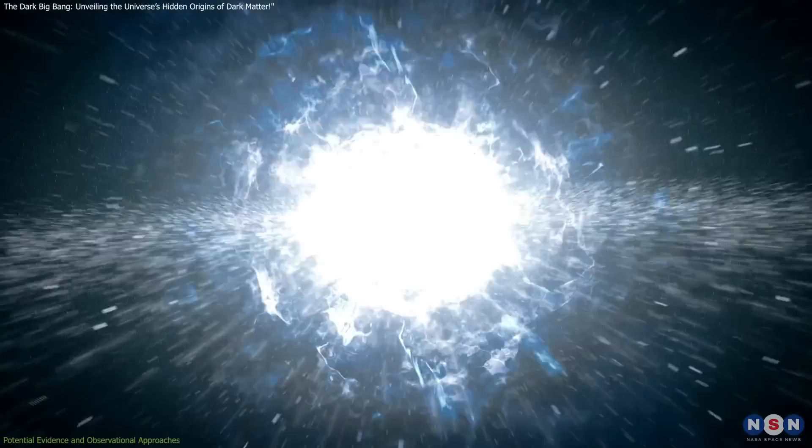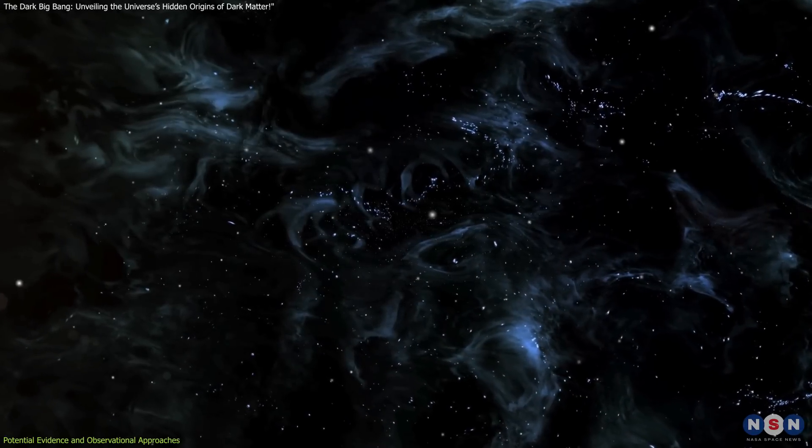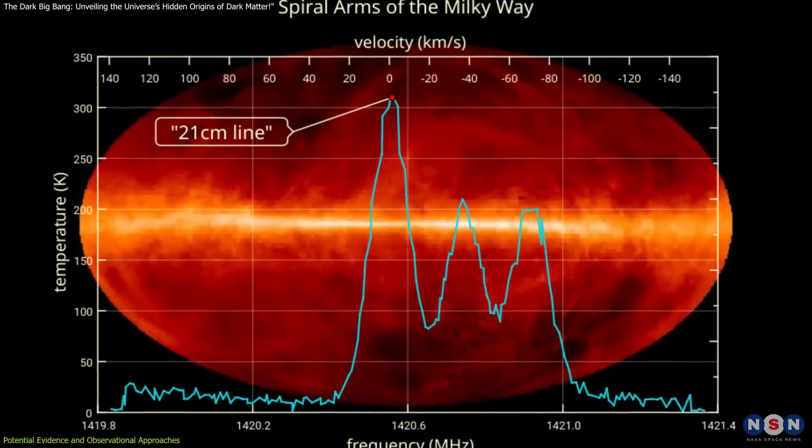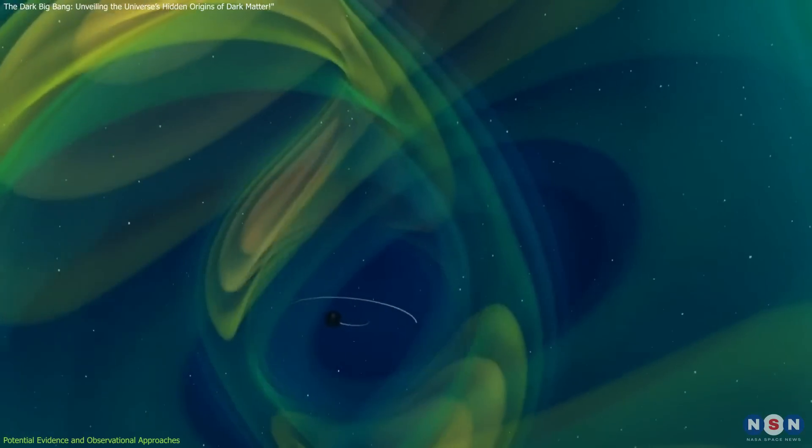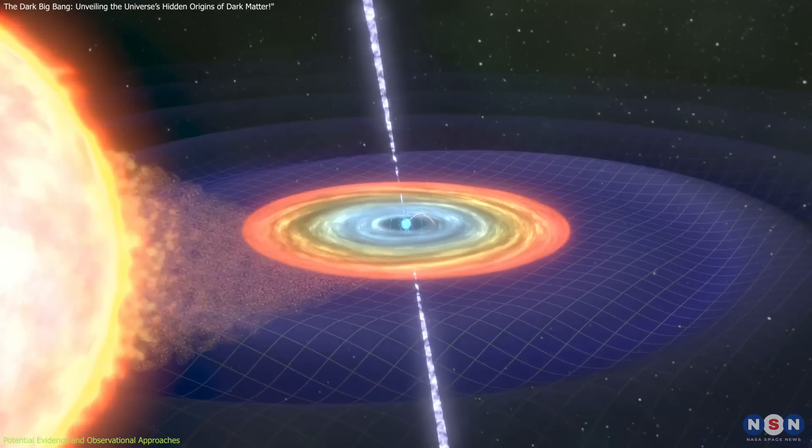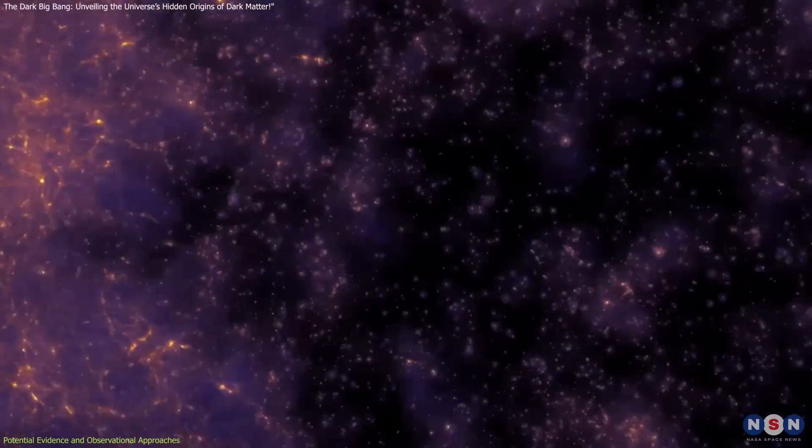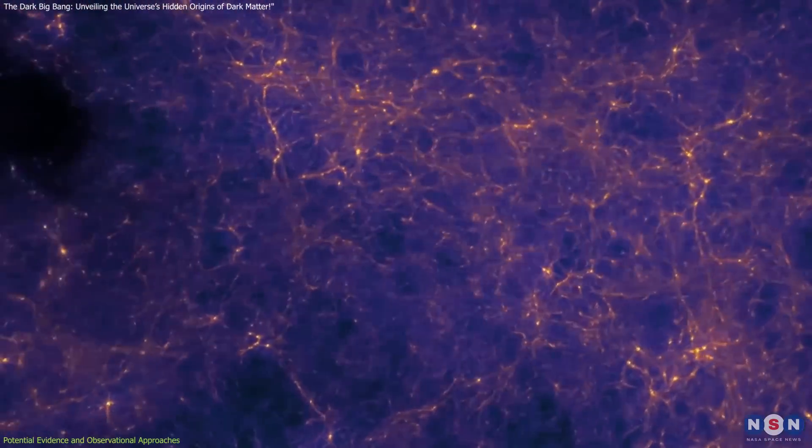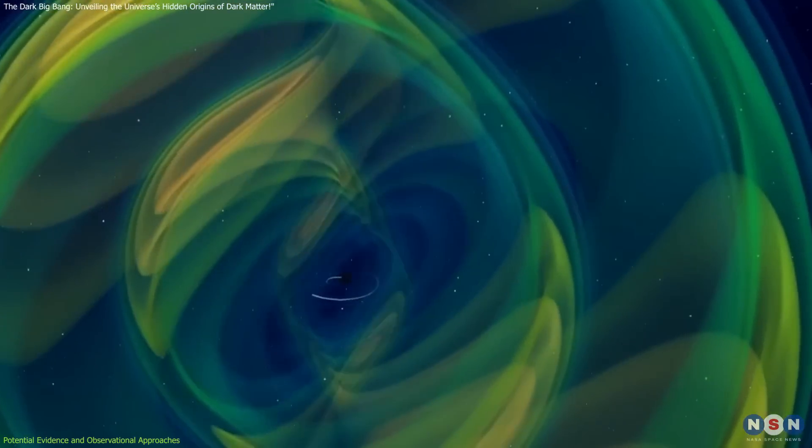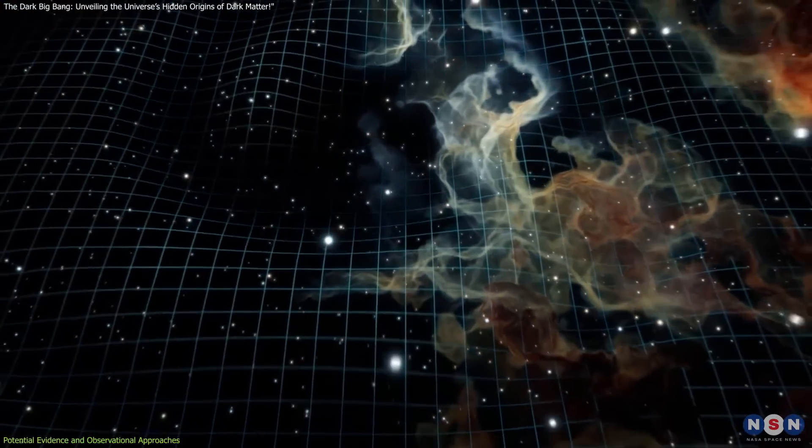Testing the Dark Big Bang hypothesis requires finding its cosmic fingerprints. Scientists have identified two primary avenues for detection—gravitational waves and the 21-centimeter hydrogen line. Let's start with gravitational waves. These ripples in spacetime are created by massive cosmic events, and the Dark Big Bang would have been no exception. A first-order phase transition in the dark sector would have generated unique gravitational waves, unlike those from merging black holes or neutron stars. These waves carry the signature of the dark sector itself.